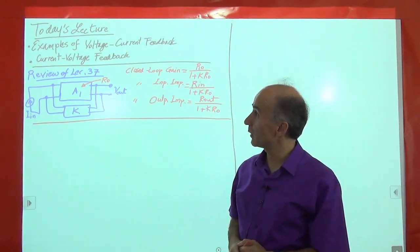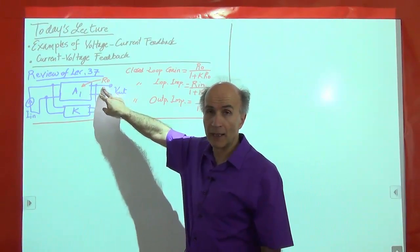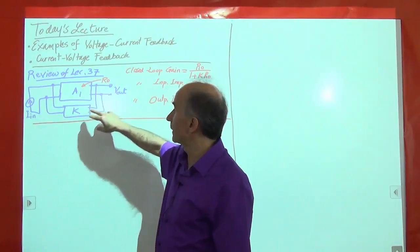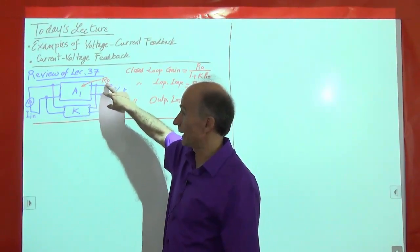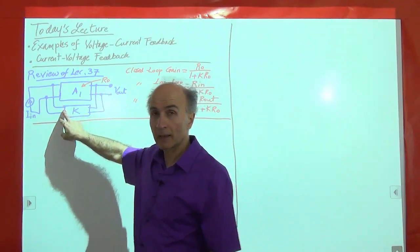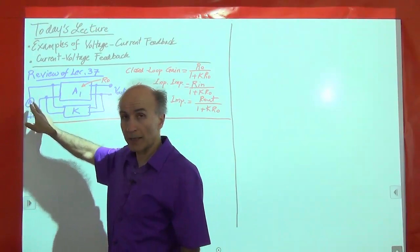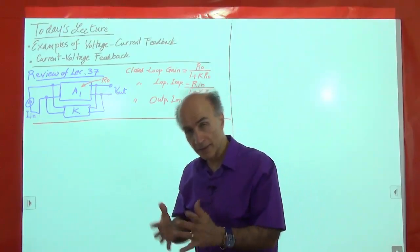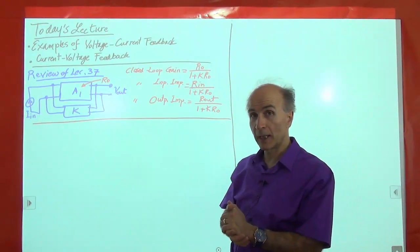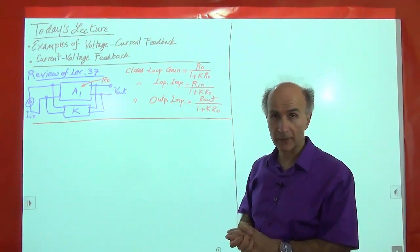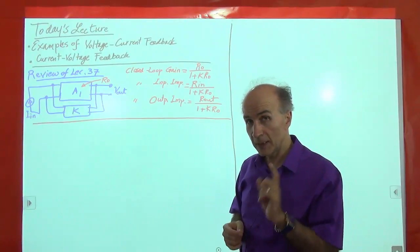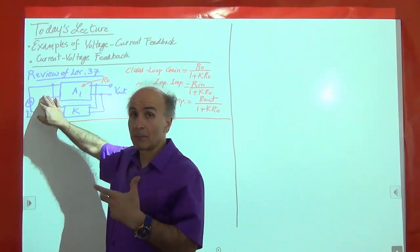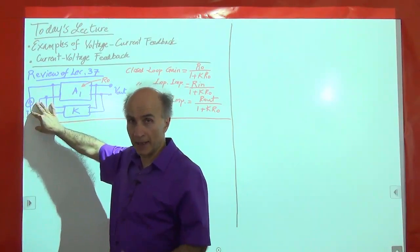What we saw last time was that in order to sense the voltage at the output of a system and process it in the feedback network and return a current, we place this port of the feedback network in parallel with the output to measure a voltage, and then we place this port also in parallel with the input because we're trying to subtract two currents. To subtract or add two currents, we always put the current sources in parallel. As a result of feedback, the closed-loop gain is lower by a factor of one plus the loop gain, and interestingly, the input impedance has gone down by one plus the loop gain. This is because the circuit is returning a current, trying to make a better trans-impedance amplifier, and that means the input impedance should be lower.